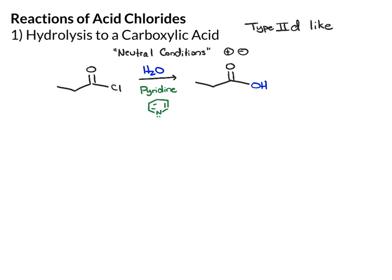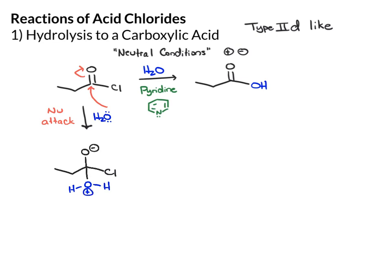The way that this is going to work: first we take the water and we add it. This step actually isn't all that slow because acid chlorides are so reactive and so electrophilic. So we have a nucleophilic attack, giving us an intermediate that has both a positive and negative charge on it.